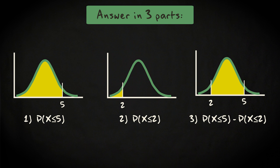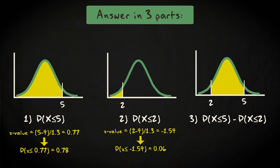This first probability, for value smaller than 5, is 0.78. The second probability, for value smaller than 2, is 0.06.